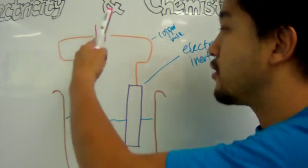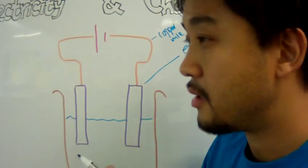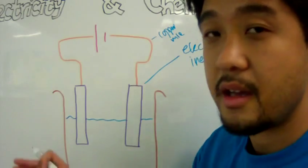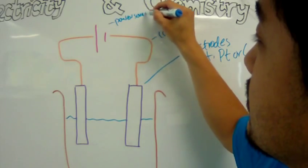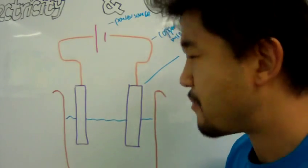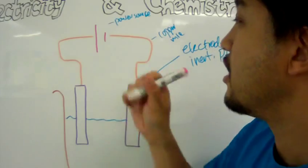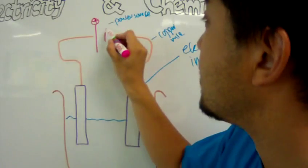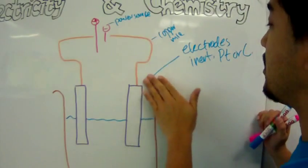You will ultimately have a power source connected to the copper wire — like a wall socket or a battery, whatever you have. When you turn on that power source, you can see that usually it is drawn by a longer line and a smaller line. The longer line represents the positive terminal of the battery, and the smaller line represents the negative end.